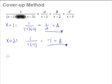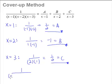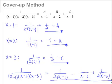Lastly, we look at C. We substitute in x equals 3 into the left-hand side and cover up x minus 3. When we substitute x equals 3, we get 1 over (3 minus 1)(3 minus 2), which is 1 over 2 times 1, giving us half. So C equals half. Therefore, the partial fractions for 1 over (x minus 1)(x minus 2)(x minus 3) equals one-half over (x minus 1), minus 1 over (x minus 2), plus one-half over (x minus 3). This is the answer by the cover-up method.